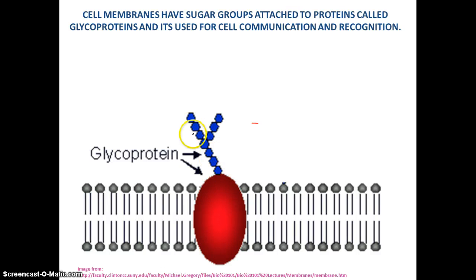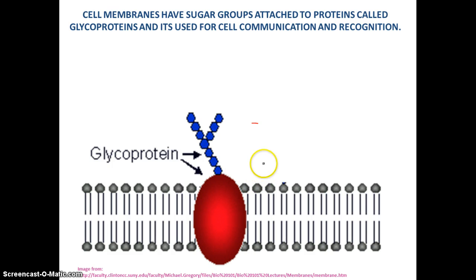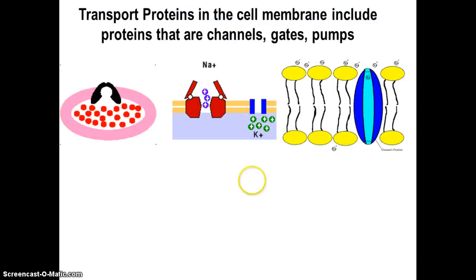We also have sugar groups attached to proteins, or even lipids, and these play an important role in cell communication and recognition. So cells can essentially say, 'I'm a skin cell,' or 'I'm a blood cell' — so the cell recognizes itself.